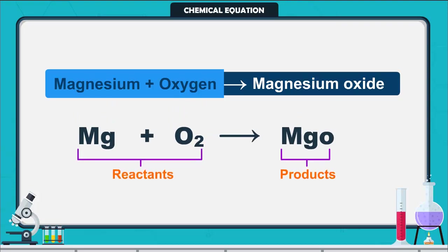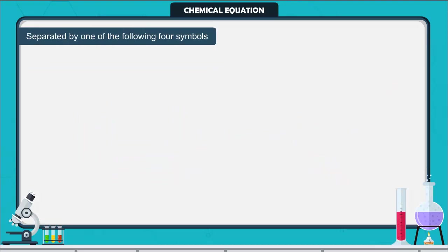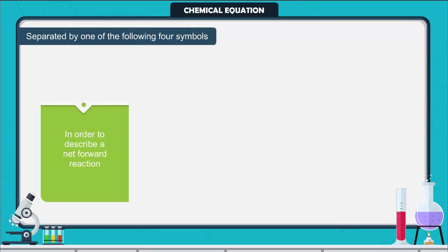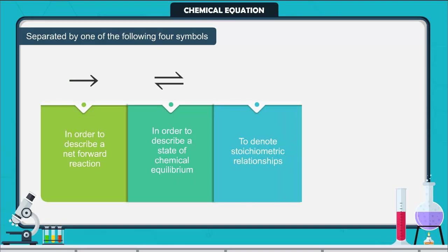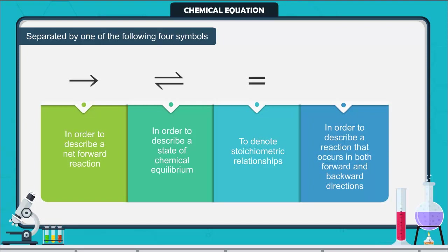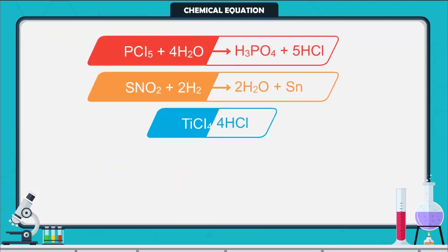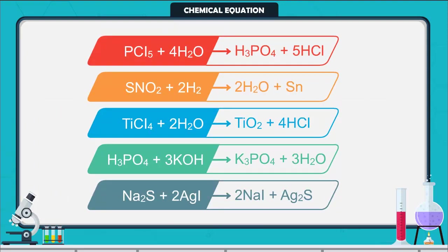The reactants and the products can be separated by one of four symbols. To describe a net forward reaction, an arrow symbol is used. To describe a state of chemical equilibrium, the equilibrium symbol is used. To denote stoichiometric relationships, an equals sign is used. To describe a reaction that occurs in both forward and backward directions, a double arrow is used. A few examples of chemical equations are listed below. A chemical equation is a way to represent the chemical reaction in a concise and informative way.